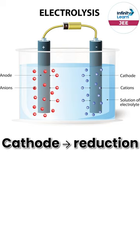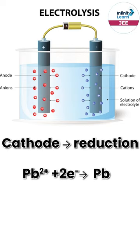What happens on the cathode? Pb²⁺ will take two electrons and must make Pb.